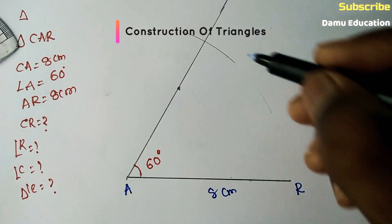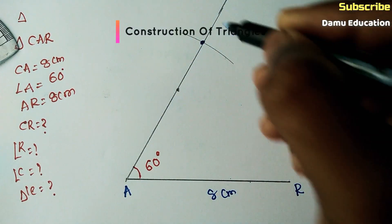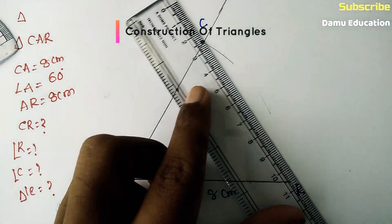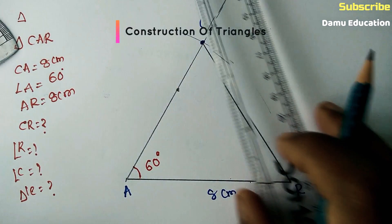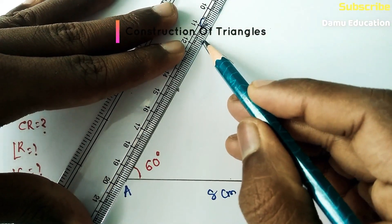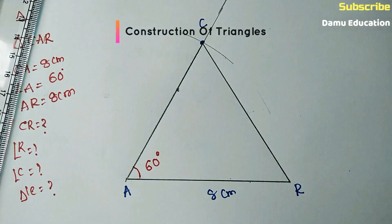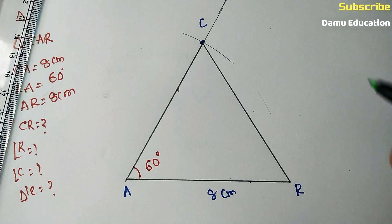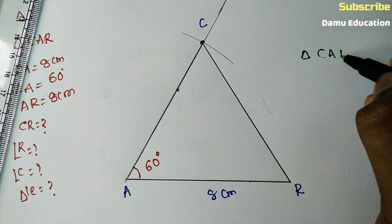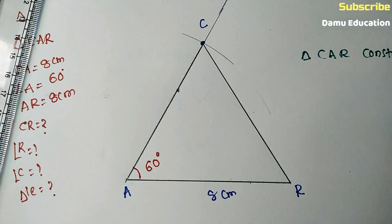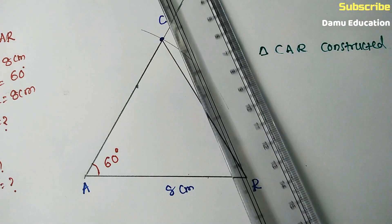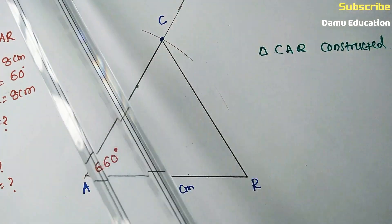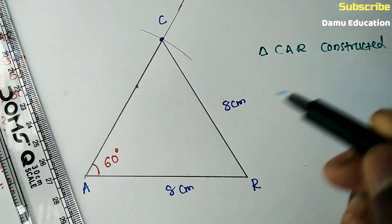That intersection point will be C. Join CR and CA — make the lines somewhat dark so they are easy to see. Triangle CAR is now constructed. Now, what they are asking is: what is the length of CR?